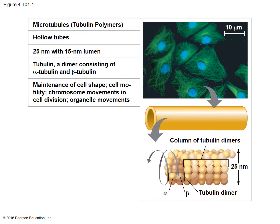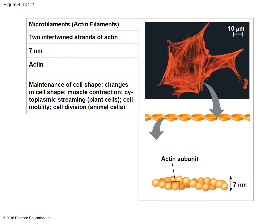Now we're going to dissect each of these pieces individually and talk about their individual functions. Microtubules are the largest of the three — they give you a nanometer range — and they're made out of tubulin, a dimer consisting of an alpha tubulin and a beta tubulin piece. Their job is to maintain cell shape, help with cell movement, chromosome movement, cell division such as mitosis, and organelle movement.